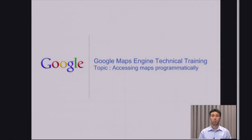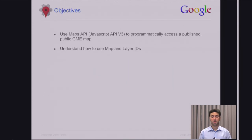In this module, we're going to talk about accessing maps programmatically. In particular, we'll talk about how to use the JavaScript version 3 API of the Maps API to programmatically access a published map from within Maps Engine.